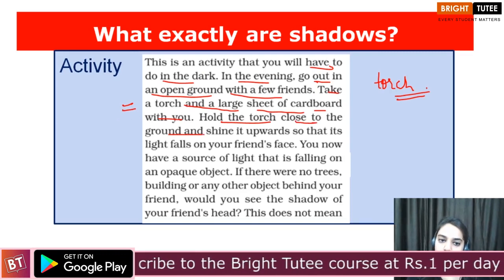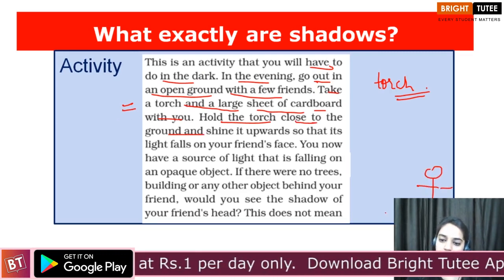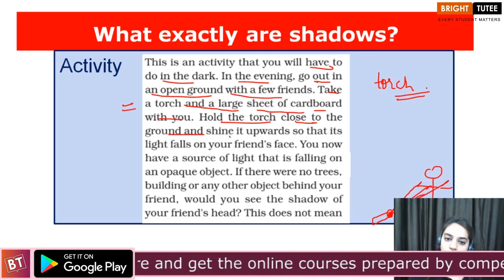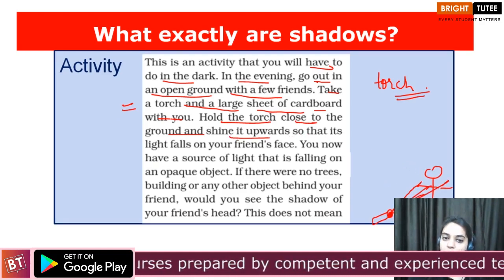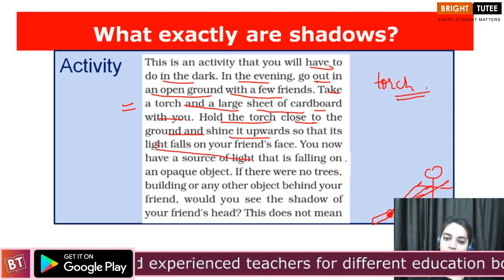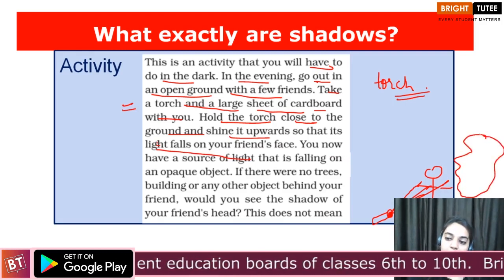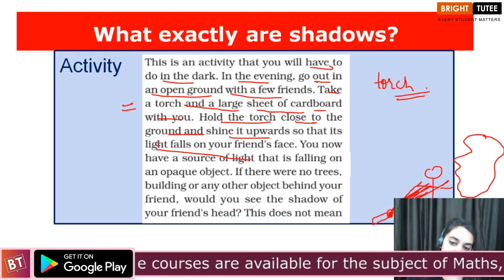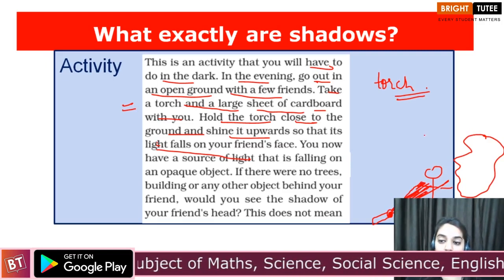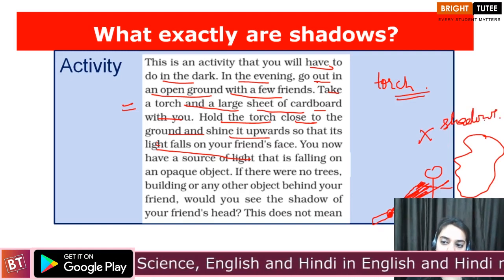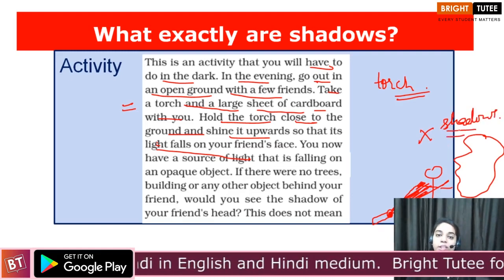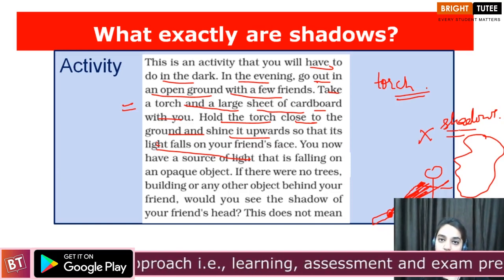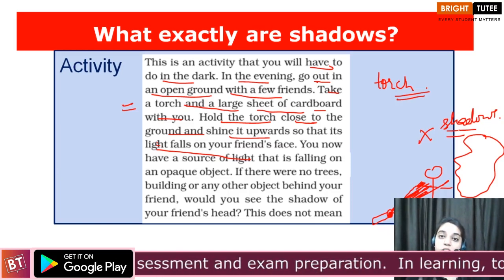Suppose here is your friend standing. You will place the torch close to the ground and switch it on, shining it upwards so that it falls on your friend's face. Now observe whether you obtain a shadow or not. You will observe that since you are lighting the torch towards your friend's face, you will not be able to find any shadow. Why? Because when you hold the torch close to the ground but there is no screen behind your friend — no tree, no building — there will be no shadow if there is no screen.